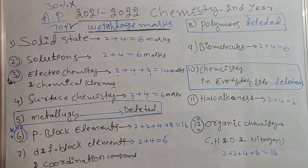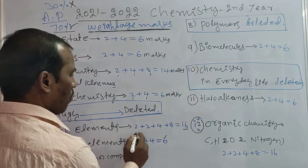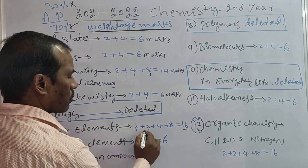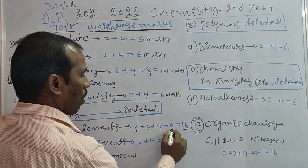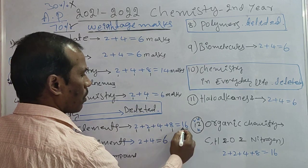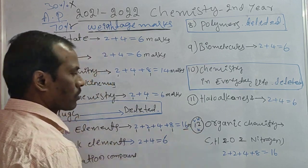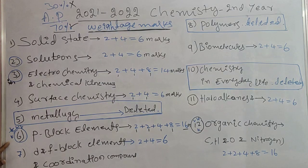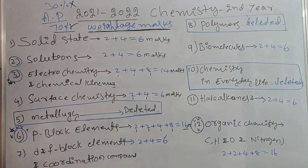Sixth topic: P Block Elements. Very short answers 1, long answers 1. Total marks here are 16 marks. This chapter carries a long answer, making it one of the higher weightage topics.